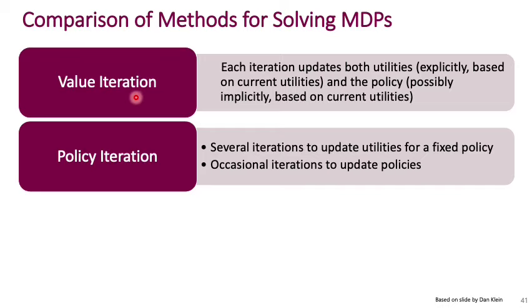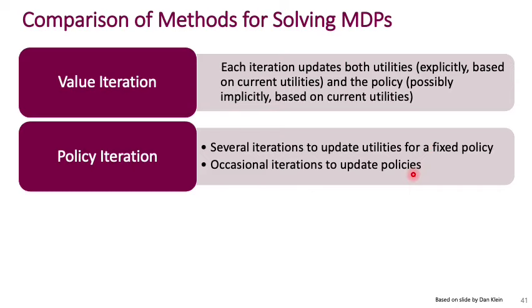In summary: value iteration updates the utility at each iteration, which automatically updates the policy. Policy iteration runs several iterations to find the values for a fixed policy, then updates the policy with a policy improvement step once converged. These aren't the only two methods — policy iteration reduces to value iteration under special conditions, and there exist hybrid methods on a spectrum between the two.